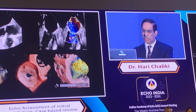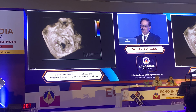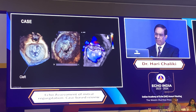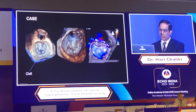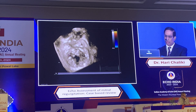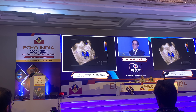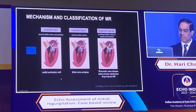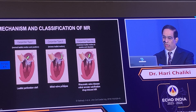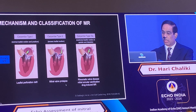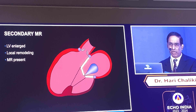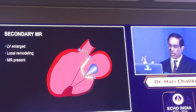Another cause of primary MR is a cleft-like indentation in the valve leaflet. You need to confirm it is leaking through the cleft to call it significant. Another view of the same patient shows exactly where the regurgitation is occurring through the cleft. So primary MR causes include mitral valve prolapse, perforation from endocarditis, annular calcification, rheumatic valve disease, and drug-induced causes.